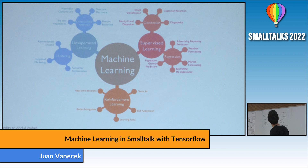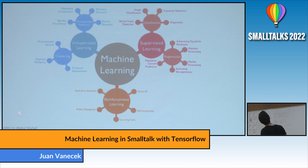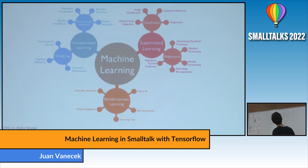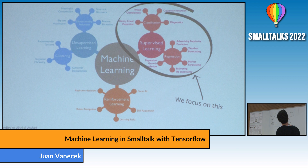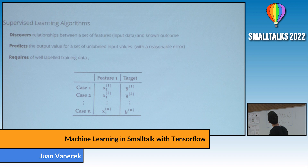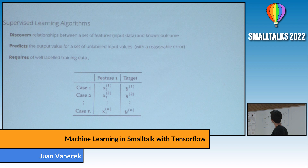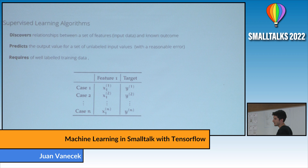These are some of the problems they aim to solve. Supervised learning targets image classification, customer retention, and diagnosis. Unsupervised learning covers customer segmentation or targeted marketing. Reinforcement learning handles robot navigation, game AI, and real-time decisions. This framework is focused on supervised learning, which tries to discover the pattern between known features and outcomes and derives a function to predict output values.